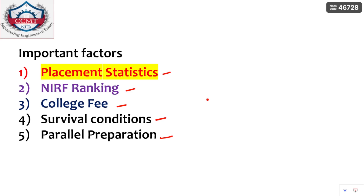The first factor is placement statistics. For example, if you want to join structural engineering, pick that branch and go through the placement statistics of each and every NIT. Make a list of NITs where placements are good in that branch and prioritize accordingly. You can also make a list based on overall placement statistics across all branches.